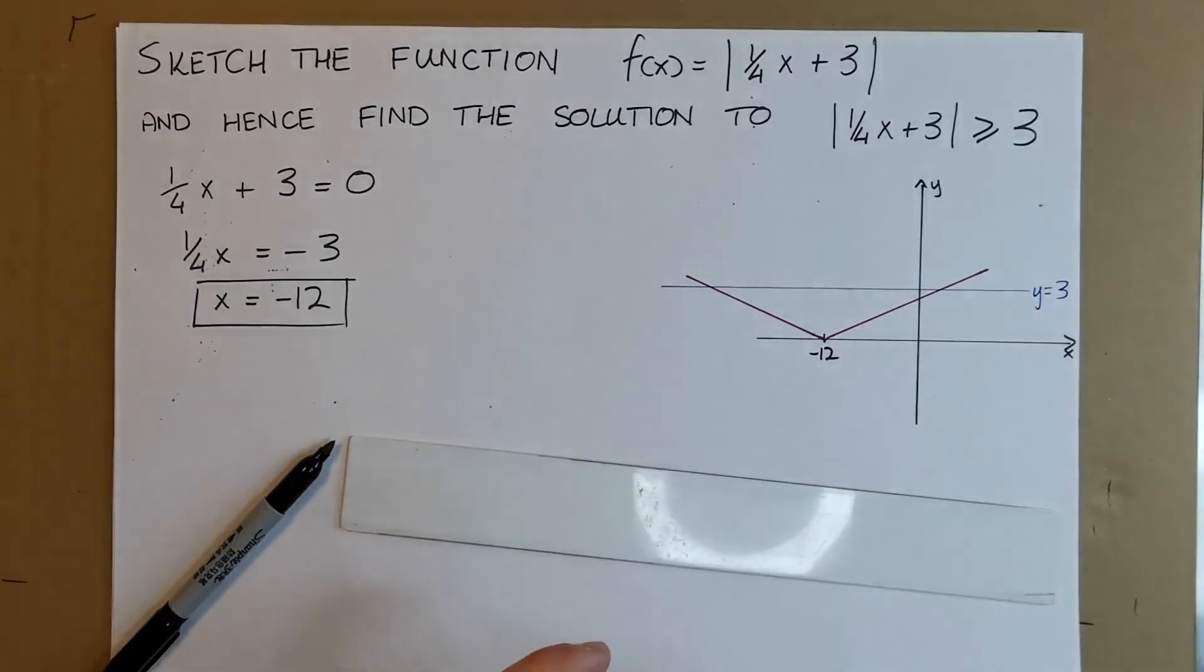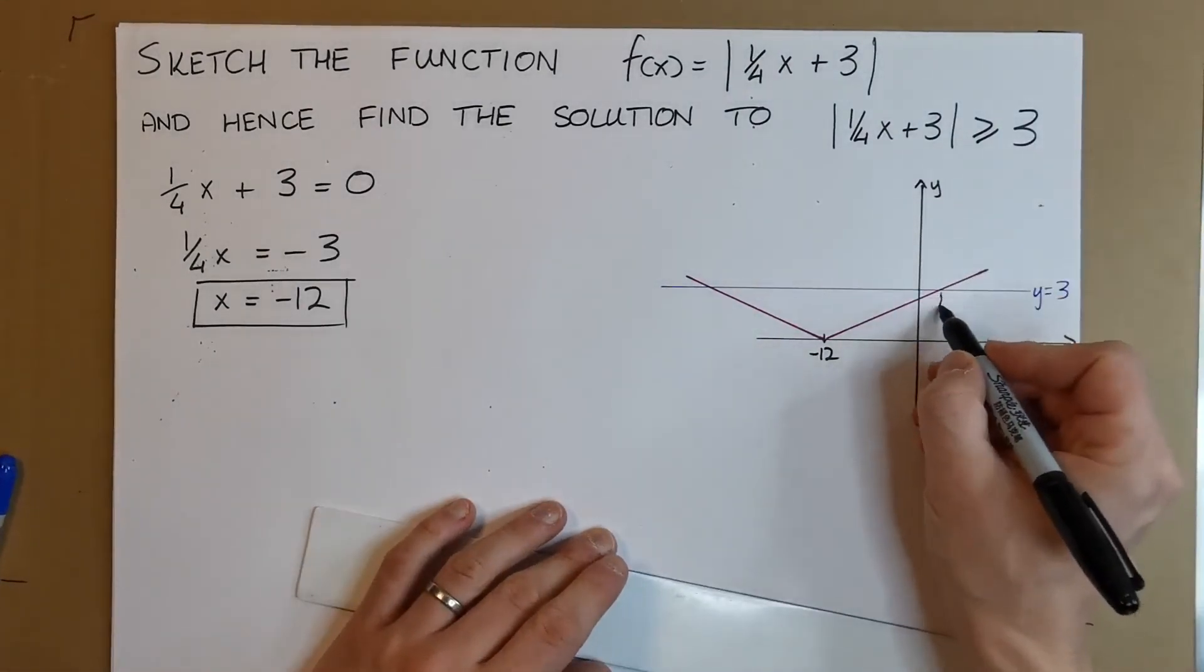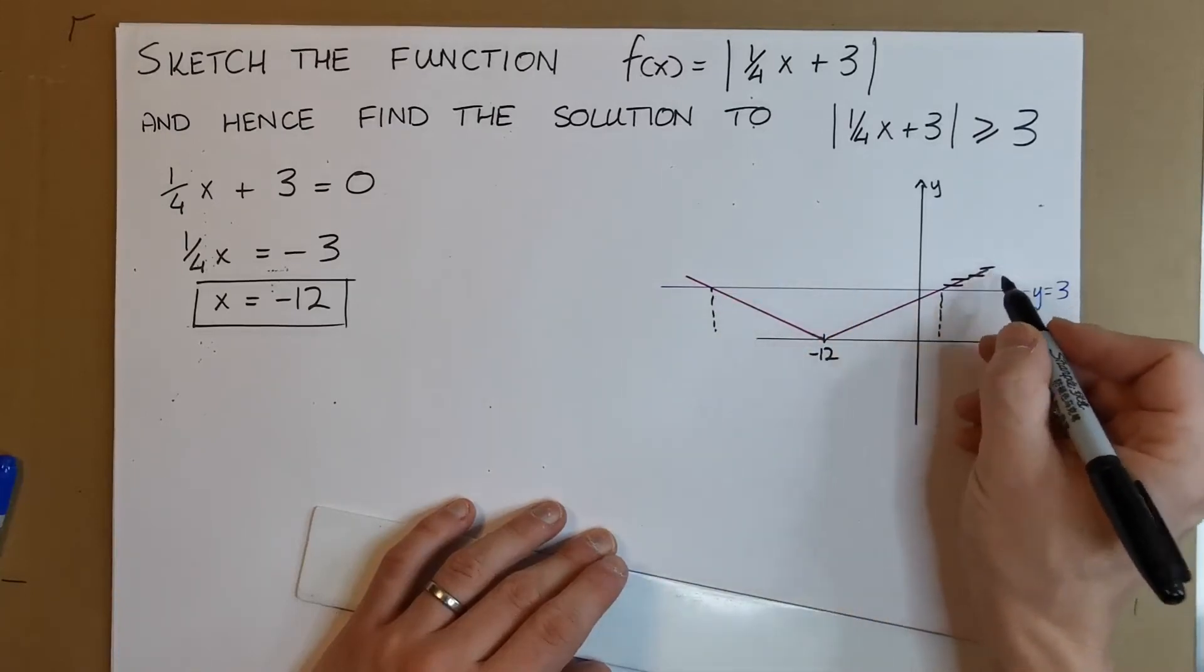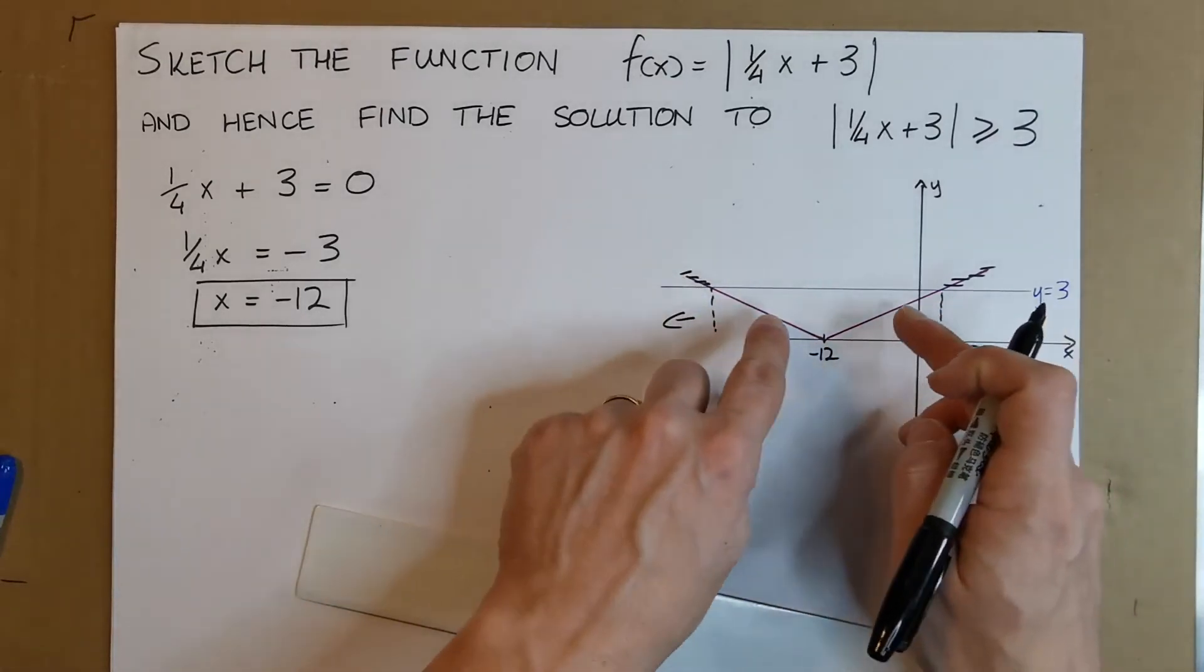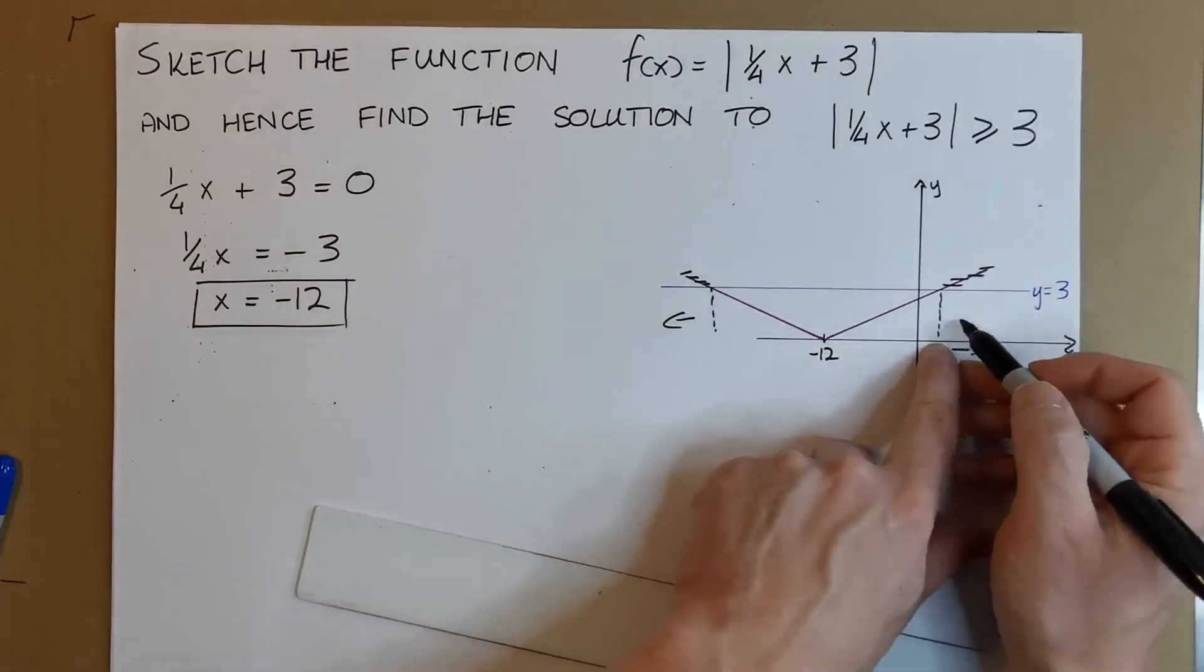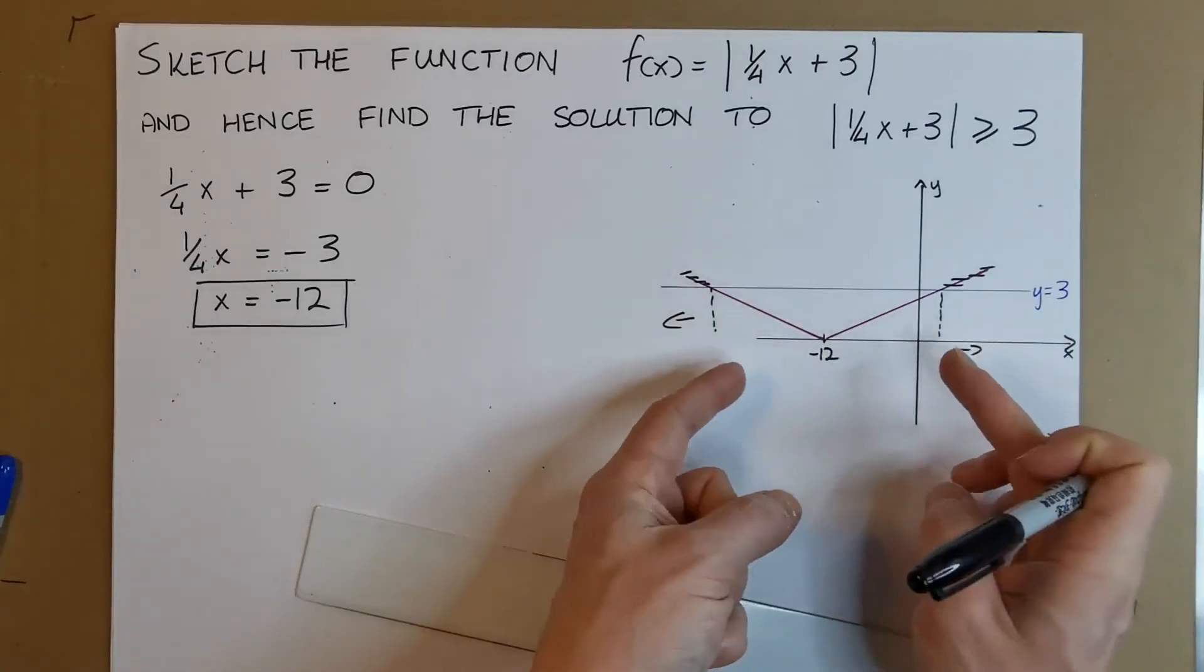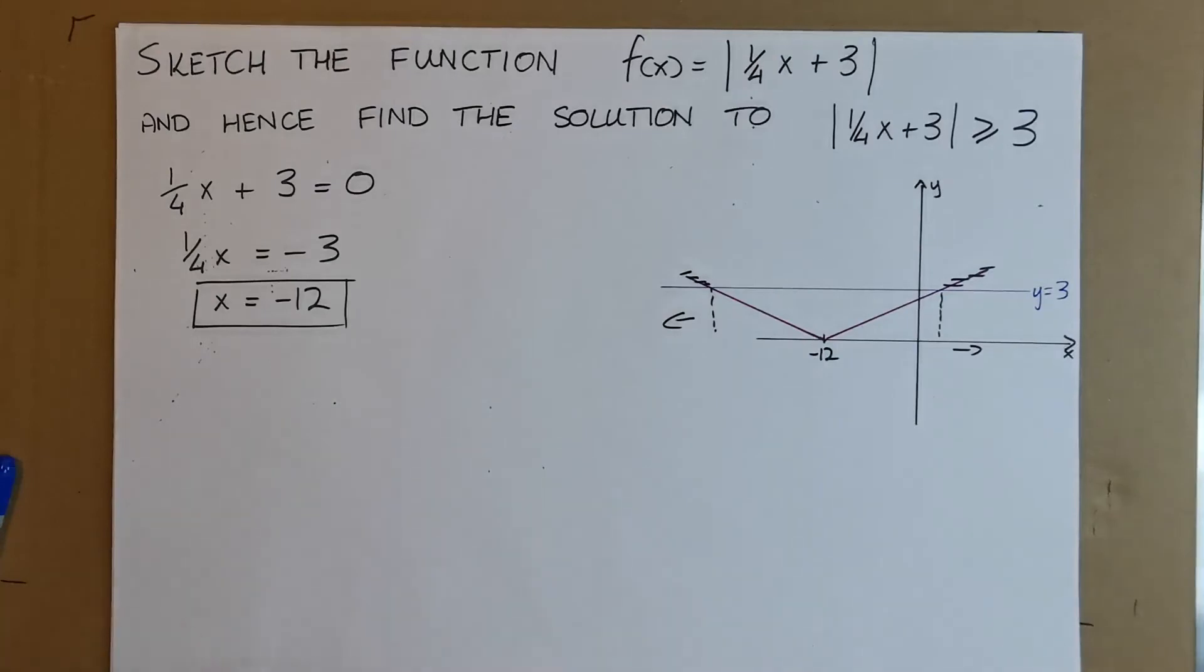We're going to have x greater than going this way or less than going this way. We won't have the values in between these two points, so it's important for shaping our inequality. Let's figure out these points.